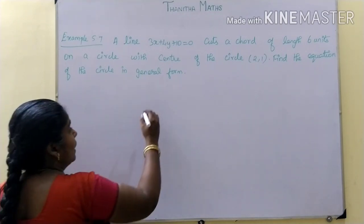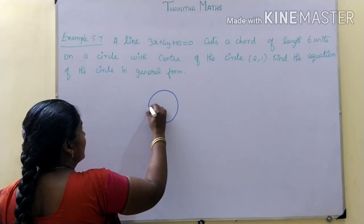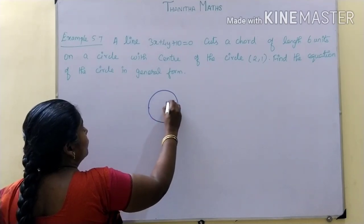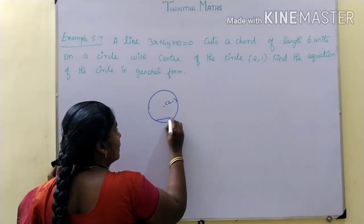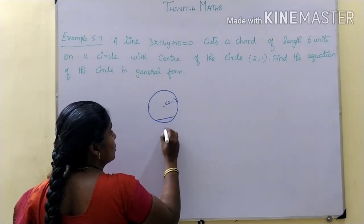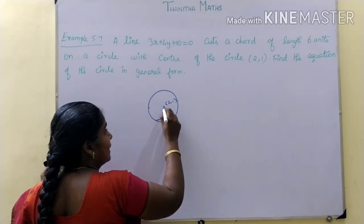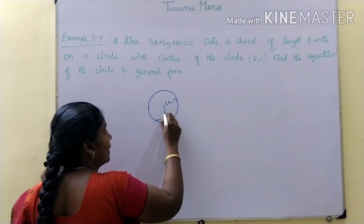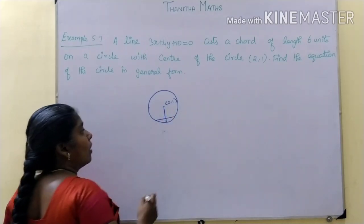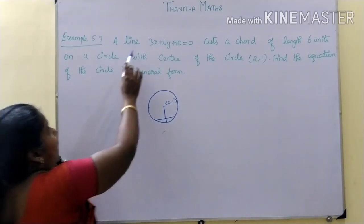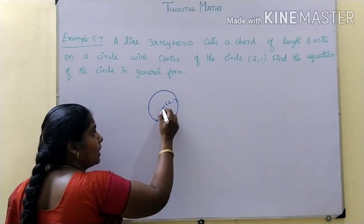We have to find the equation of the circle. The center of the circle is 2,1. There is a chord and the length of the chord is 6 units. The line 3x plus 4y plus 10 equal to 0 cuts the chord of length 6 units.